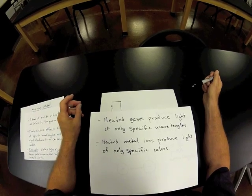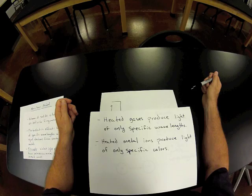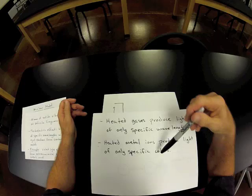So different elements, different elemental gases, produce different light spectrums when they're heated, or when an electrical current is run through them.